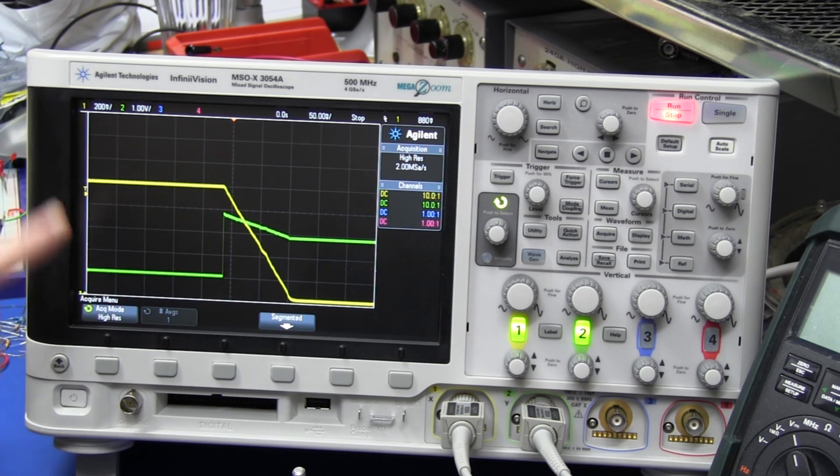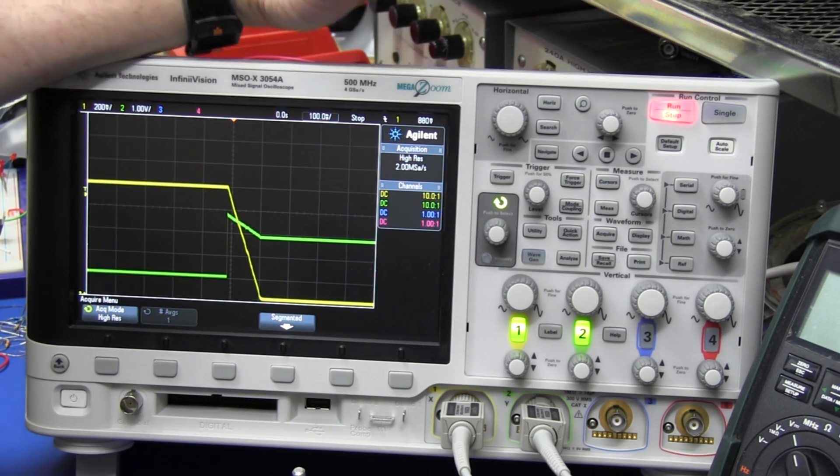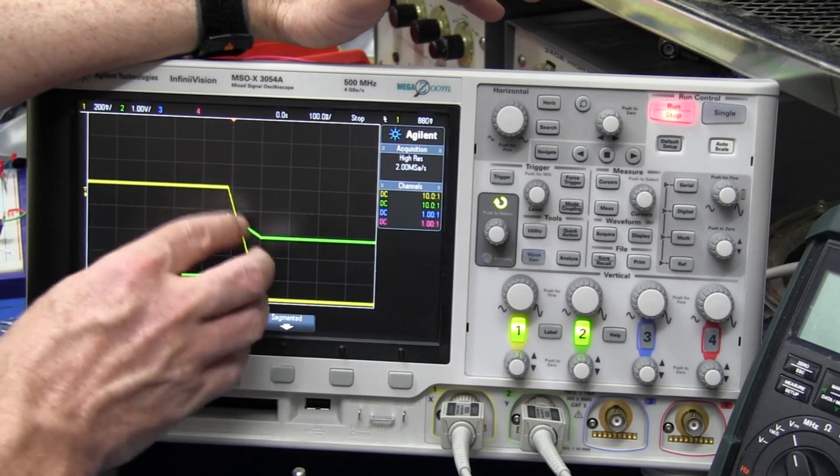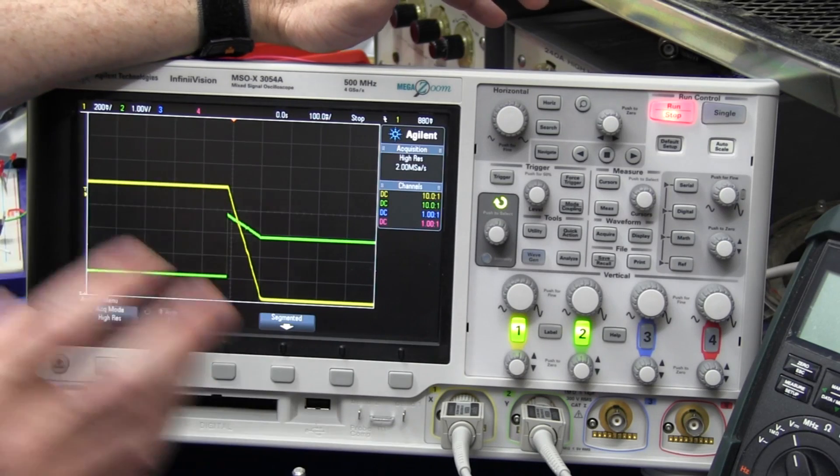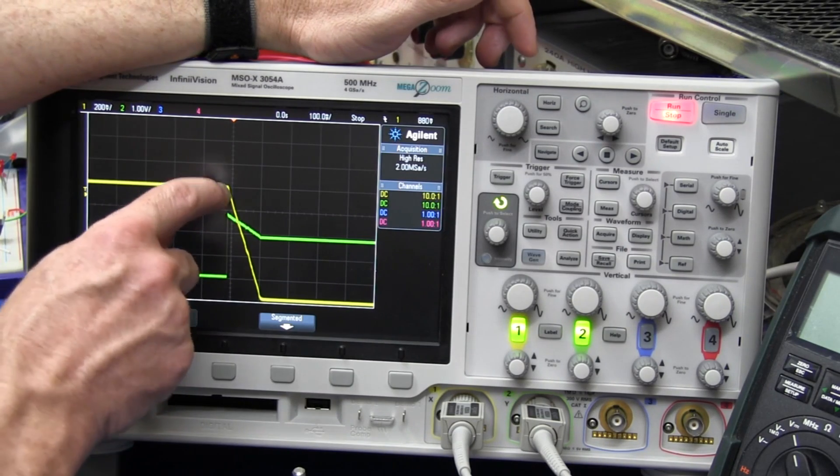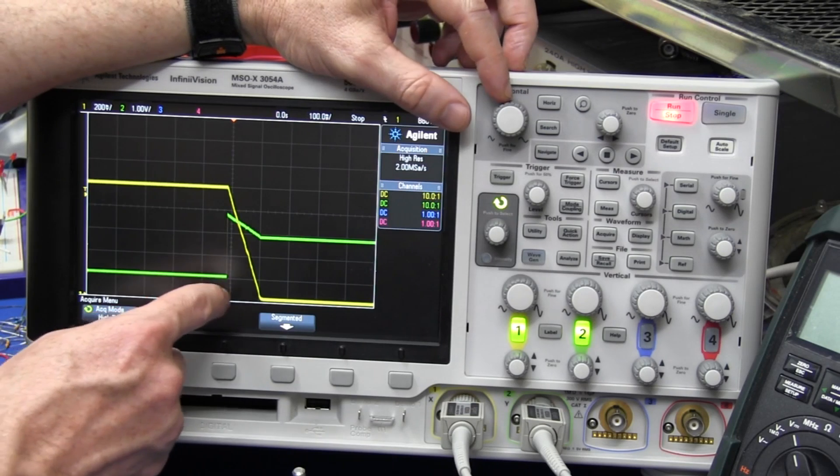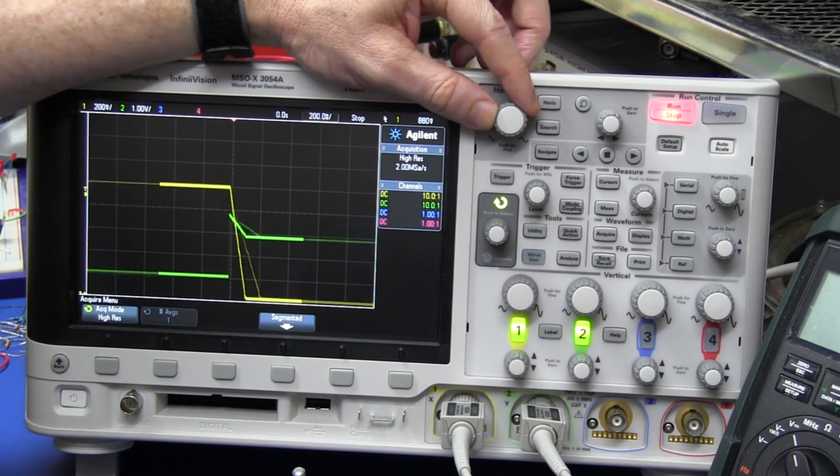But I just thought I'd show an example here of how it can be a little trap when you've got high frequency noise superimposed on a low frequency signal that you're looking at. In this case, I've got a couple of signals here which I'm capturing, they're very slow, 100 milliseconds per division.